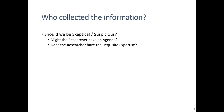On the other hand, the second question we ask when evaluating secondary data is who collected the information. As we evaluate the source of the original research, there are two things we're looking for. First, is there any evidence that the researcher may have had an agenda or a bias when conducting the research? Secondly, we're looking for evidence that the researcher actually has the requisite expertise necessary to properly conduct the research study.